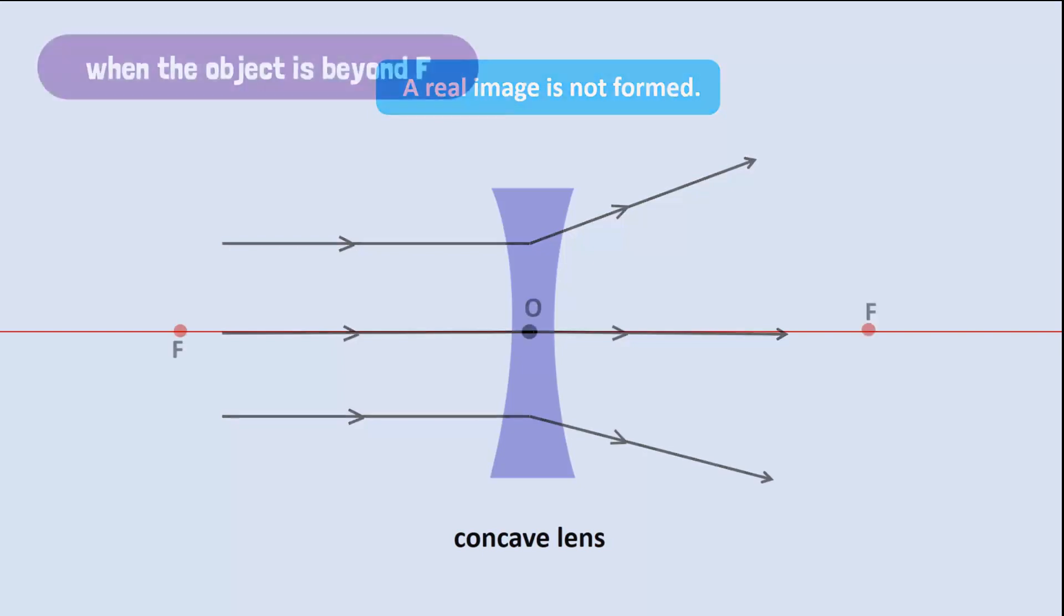If we place the candle beyond the focal point, the rays will leave from the top of the candle through the lens and refract. The image, however, will be formed on the same side between F and O.